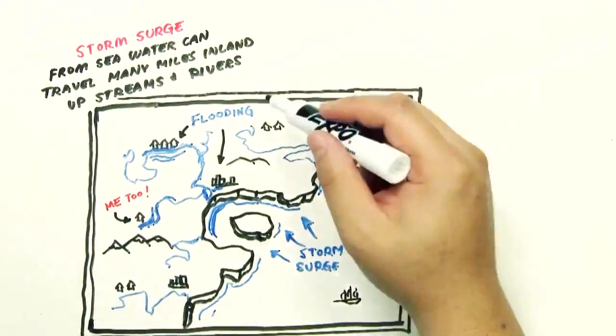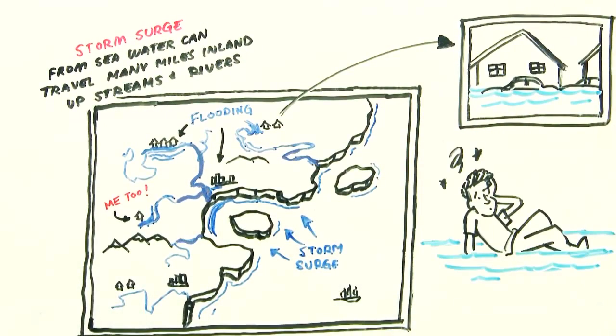Not limited to coastal properties, storm surges from seawater traveling up streams and rivers can flood inland homes too.